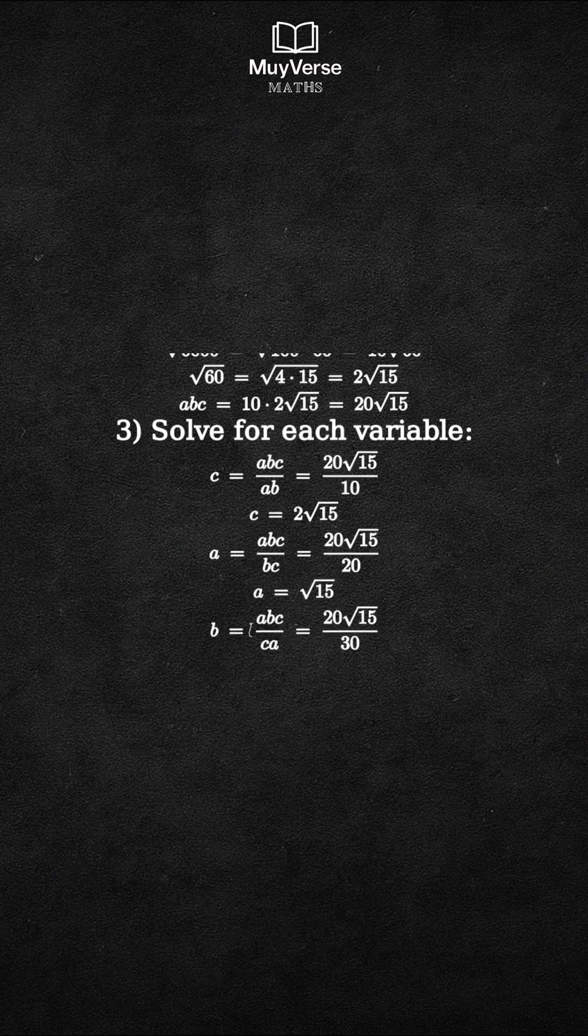From ca equals 30, we get b equals abc divided by ca, which is 20 square root 15 divided by 30. Divide numerator and denominator by 10 to get 2 square root 15 over 3.